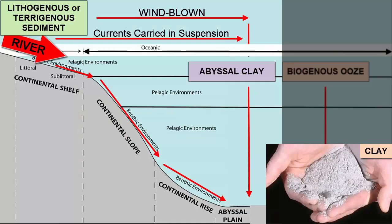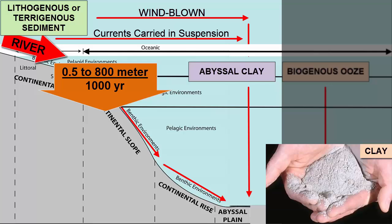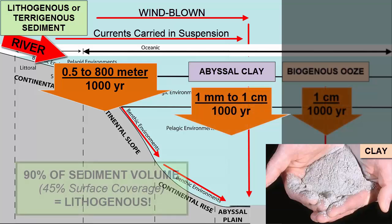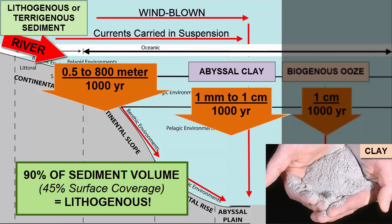Clay minerals are mud-sized and are the most common byproducts of rock weathering on Earth's surface. Some of these clay minerals make it out to the oceanic zones, either by being held in suspension near large river deltas or by being carried by winds off desert and mountain areas. We call those clays abyssal clays, as they are found in abyssal plains. As lithogenous sediment dominates the coastal margins and also reaches out in its mud-sized form to the deeper parts of the oceans predominantly as abyssal clay, lithogenous sediments make up the largest percentage by volume of marine sediments.